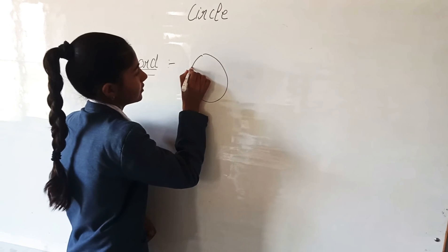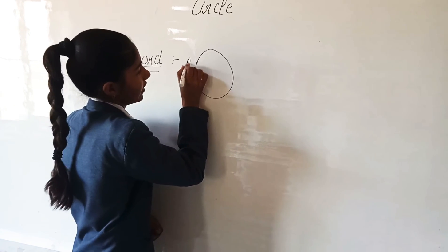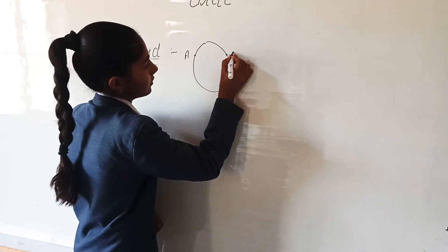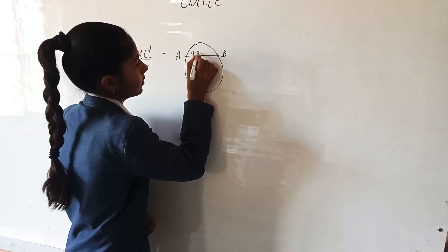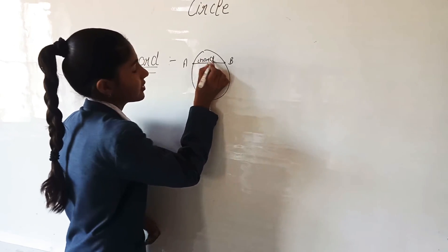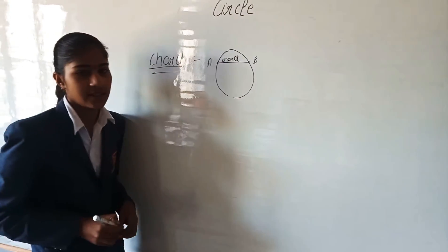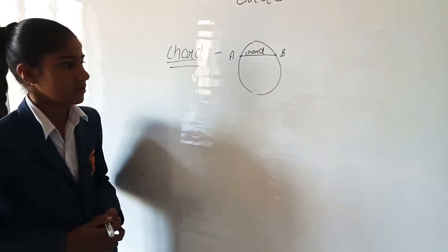Let this point be A and this point B. The line AB is known as a chord. The longest chord of a circle is the diameter.